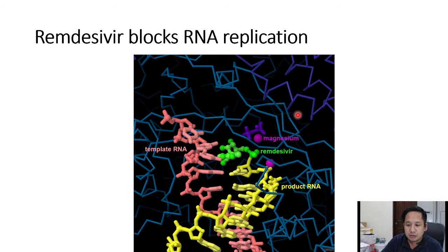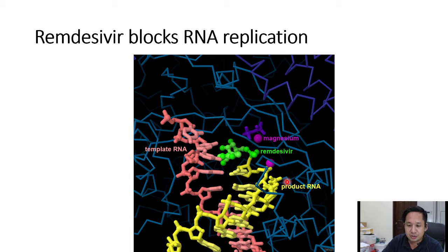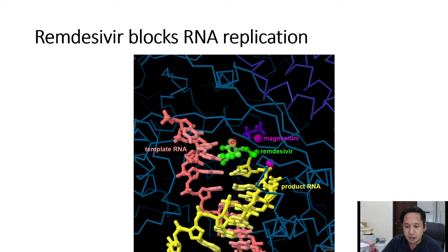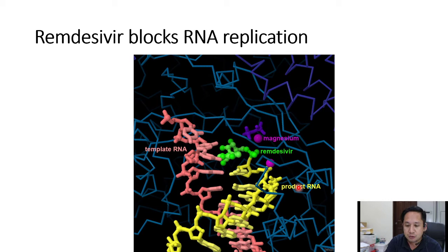Here is another image showing the incorporation of Remdesivir into the growing newly synthesized RNA, shown in yellow, while the template RNA is shown in pink. Once Remdesivir is incorporated into the growing RNA strand, the replication stops because its structure is slightly different from the usual RNA template. We can see that the yellow strand is shorter because the replication has halted. Replication stops, and the virus does not multiply inside the host cell. That's the mechanism behind the use of antiviral drugs.